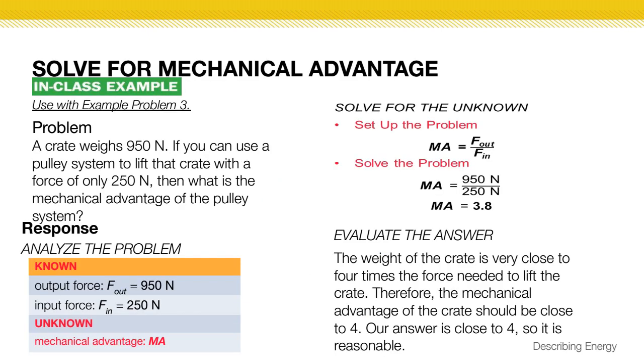Now here's our example. Let's say you have a crate that weighs 950 newtons. Remember that's the unit for force. If you can use a pulley system to lift that crate with a force of only 250 newtons, which means even though the crate weighs that much, you only have to use 250 newtons. This is a pretty good machine. It's a lot less work that you have to do. Then what is the mechanical advantage? Basically, that's asking how useful is this machine, is it even worth it, is the exact same force being applied? Let's find out.